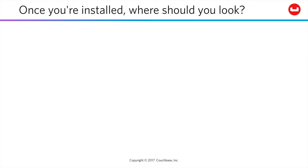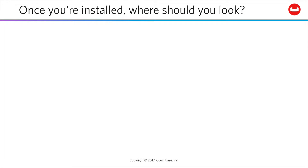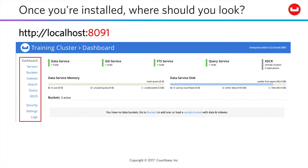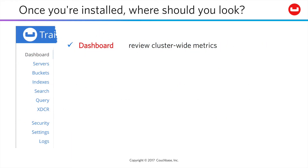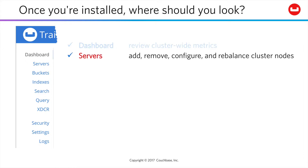Once your installation process is finished, your browser should open to the admin UI at localhost 8091, or you can directly open it yourself. Bookmark that link. Navigation is on the left. The UI opens on the dashboard, where you can quickly review cluster-wide metrics. The server screen lets you add, remove, configure, and rebalance the nodes in your cluster. You can also drill down for detailed information about individual nodes.